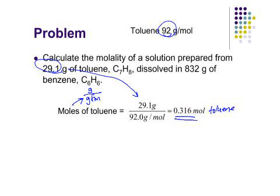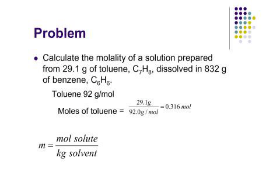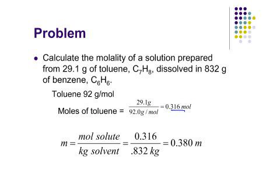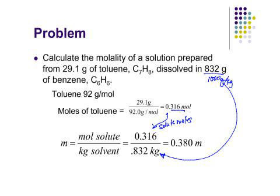Now we're ready to move into the molality formula. Molality equals moles of solute divided by kilograms of solvent. We have 0.316 moles of solute. We take the 832 grams, divide by a thousand grams per kilogram to get 0.832 kilograms. That gives us a molality of 0.380 m. When you do this on your calculator you might get a slightly different answer — remember, we're only allowed three sig figs, so we correct for that, and the unit is lowercase m.